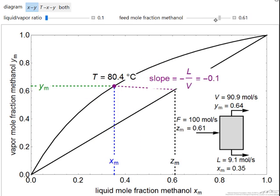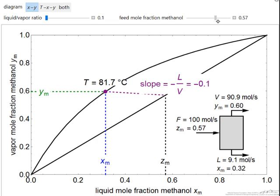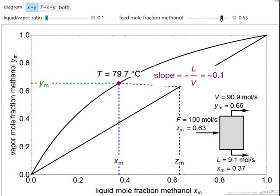I can also change the feed concentration, and of course that's going to change what our outlet conditions are. We're specifying in this case what's the liquid to vapor ratio and what's the feed composition.